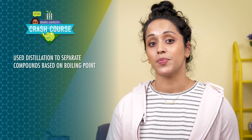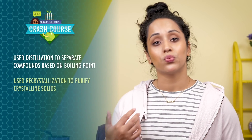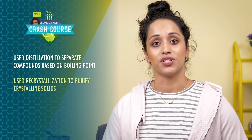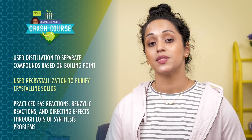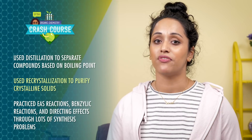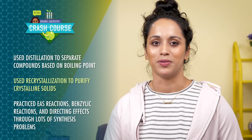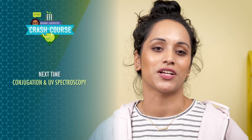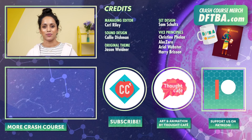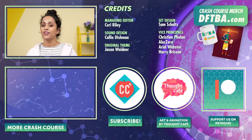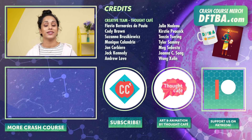In this episode, we used distillation to separate compounds based on boiling point, used recrystallization to purify crystalline solids, and practiced EAS reactions, benzylic reactions, and directing effects through lots of synthesis problems. In the next episode, we'll look more at conjugated compounds and learn about UV-Vis spectroscopy. Thanks for watching this episode of Crash Course Organic Chemistry. If you want to help keep all Crash Course free for everybody forever, you can join our community on Patreon.